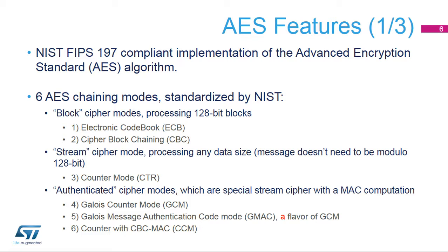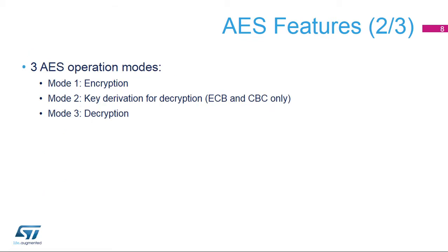Block cipher modes are useful when data to be encrypted has been stored in buffers. Stream cipher mode is useful to efficiently encrypt or decrypt data at bit level, and not at block level — this mode does not require key scheduling. Authenticated modes are used to generate a message authentication code, or MAC, along with encrypted data if enabled.